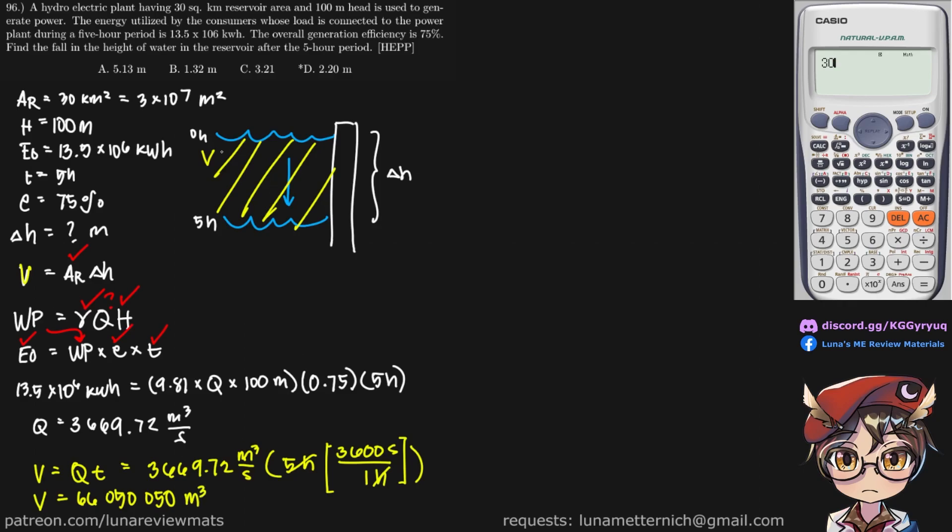So that's how much water has been removed after our five hours. So now we have our V and we should be able to find our delta H via direct substitution.